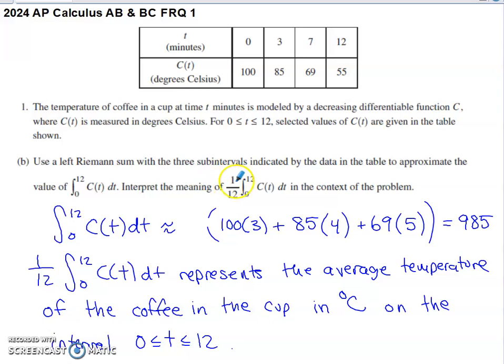They ask us to interpret the meaning of 1 over 12 times the value of that integral within context. It's a little odd that they didn't ask us to include the 1 over 12 in the estimate that we were making. They just asked us to estimate the value of the definite integral. Now they're saying, if you multiply that definite integral's value by 1 over 12, what would that represent within context? Hopefully you recognize that the difference between these limits of integration is 12. Because we're dividing the integral by 12, we're looking at an average value of the function C of T calculation. It would represent the average temperature of the coffee in the cup measured in degrees Celsius on the interval 0 to 12.